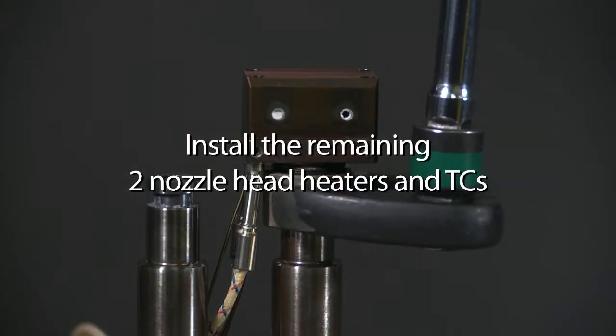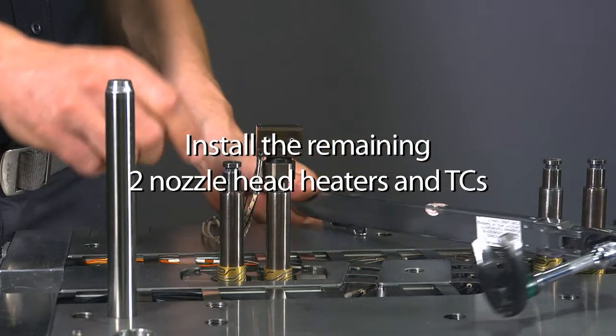Install the remaining two nozzle head heaters and TC's. On tools with a larger drop-to-drop pitch that allows for access with your hands, you can first install the nozzle head, torque the retaining nut, then install all cartridge heaters and TC's last.